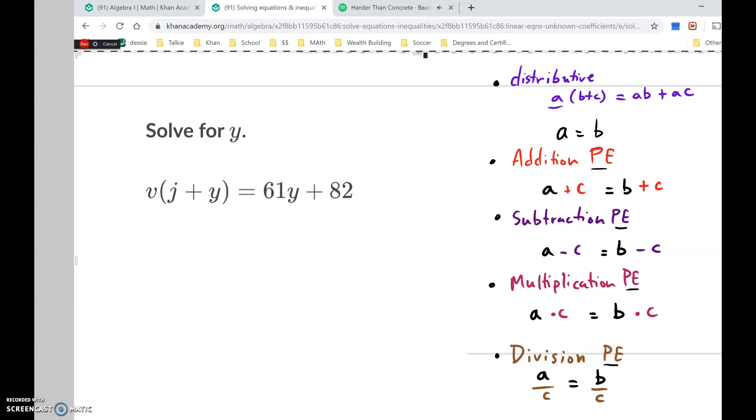We have the distributive property, which allows you to give this a to both the b and the c through multiplication, so ab plus ac. The addition property of equality where you can add a value to the left expression as long as you add that same value to the right. Subtraction property where you subtract that same value to both expressions. Multiplication property of equality where you can multiply to both expressions. And division property of equality where you can divide to both expressions.